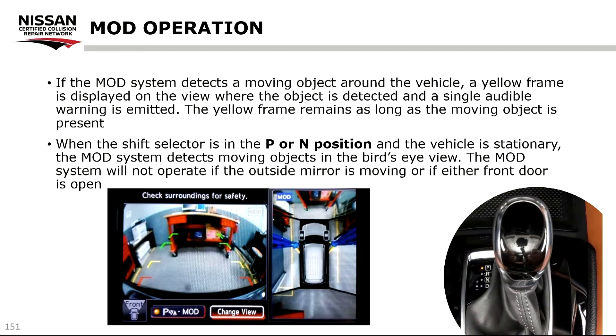When the shift selector is in Park or Neutral and the vehicle is stationary, the MOD system detects moving objects in the bird's eye view. The MOD system will not operate if the outside mirror is moving or if either front door is open. This feature is used to detect phantom shopping carts that tend to hit vehicles in a parking spot — the MOD operation alerts the driver that something is moving and where it's moving.